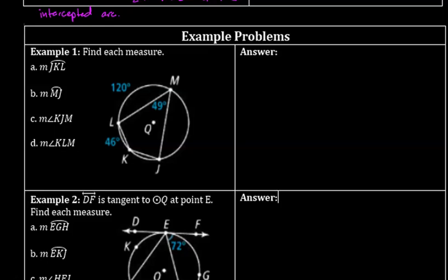We're going to take a look at a few example problems from section 10-4, where we're looking at mostly inscribed angles — angles where the vertex is on a circle and the sides are made of chords, or maybe a chord and a tangent. In this first example, we have a picture with four parts, and basically we need to find any missing angle or arc measure.